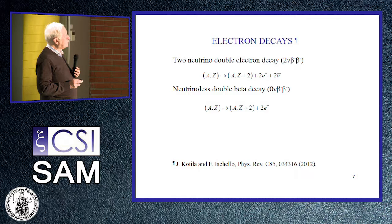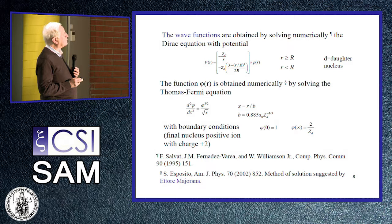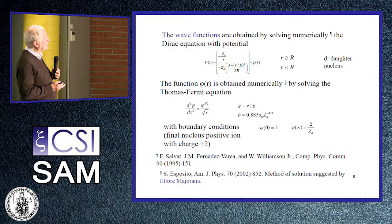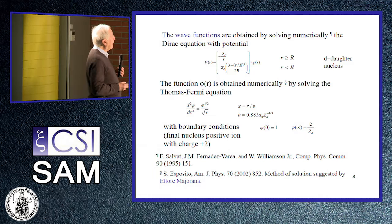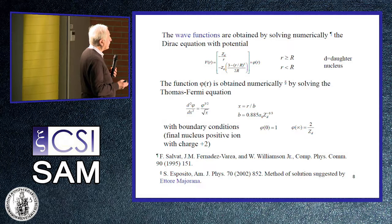For two-neutrino electron decays, two electrons and two antineutrinos are emitted. The wave functions are obtained by solving numerically the Dirac equation. Outside the nucleus, the potential is just a Coulomb potential of the daughter nucleus. Inside the nucleus, it is the potential of a spherical charge distribution multiplied by a function phi, which is obtained numerically by solving the Thomas-Fermi equation.